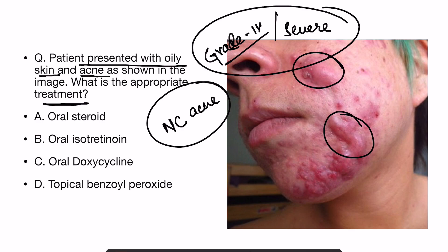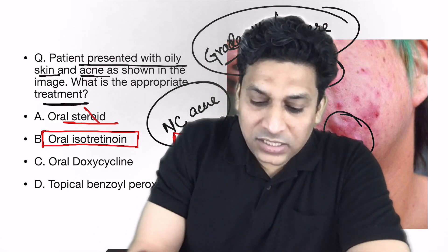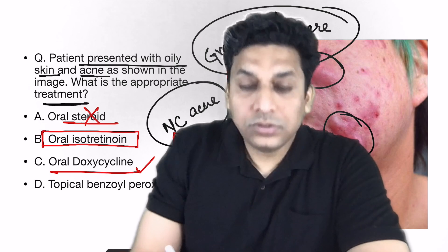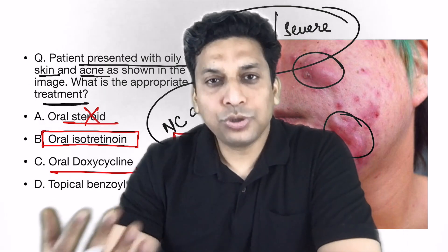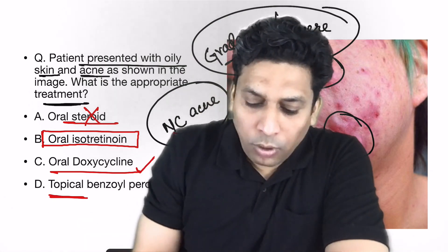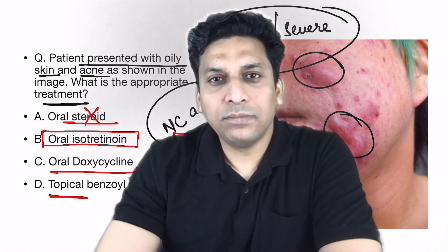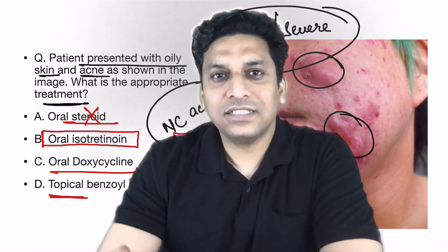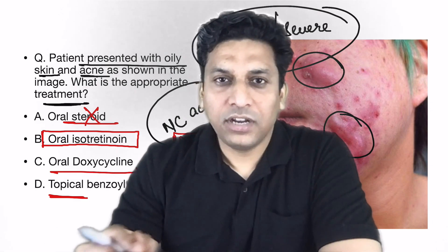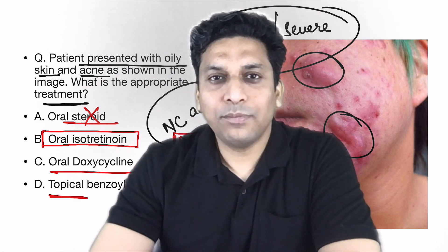The drug of choice for nodulocystic acne is oral retinoid, or oral isotretinoin. Remember that steroids should not be used in acne — steroids are contraindicated. Doxycycline can be used, but generally in grade 3 where pustular lesions are present. Here, because nodulocystic lesions are present, the best drug is isotretinoin. Topical benzoyl peroxide is also used in acne treatment, but not in such a severe grade — grade 4 — because in grade 4 we require the best drug, which is oral isotretinoin for nodulocystic, grade 4, or severe acne vulgaris.